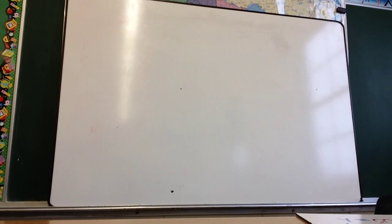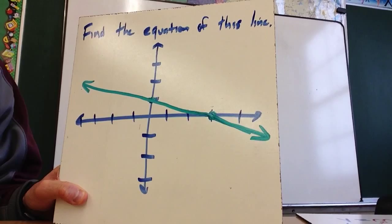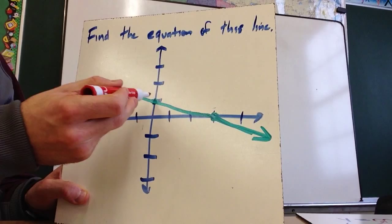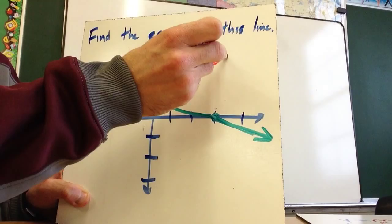And then the last thing I want to do is talk about an equation of a line that is, if I give you this graph, so how can I find the equation of this line? So I'm looking for, first off, what is the y-intercept? And the y-intercept is 1, right? Because that's this point. Where does it cross the y-axis?